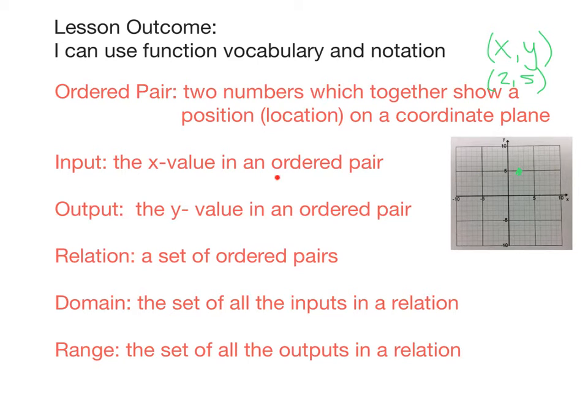An input is the x value in an ordered pair. So in this example up here, 2, 5, our input is 2. If that number 2 was put in or input, which is why it's called an input, into a function, the output, what comes out of that function, is a y value. And in this case, that y value is 5. So that is our output for this ordered pair.